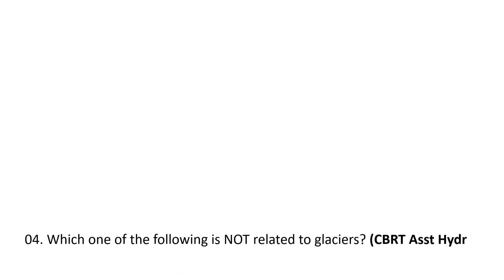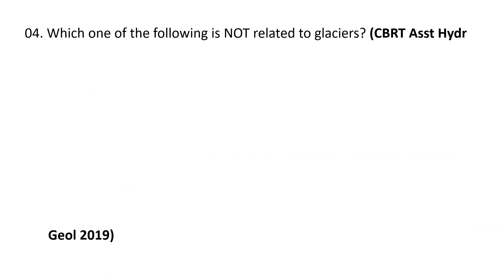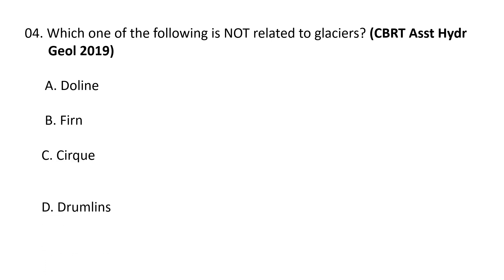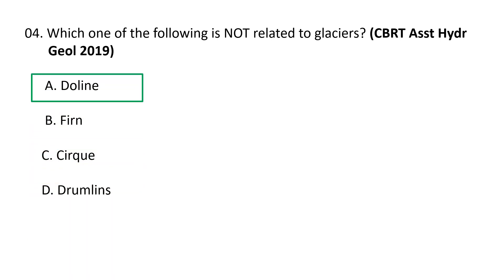Next question: which one of the following is not related to glaciers? a) doline, b) firn, c) cirque, d) drumlins. Doline is not related to glaciers, whereas firn, cirque, and drumlins are all related to glaciers. Dolines are formed by two main methods: slow solutional removal of rock from the surface downward, or by collapse of overlying material into an underground cave or chamber — also known as a collapsed doline. So the correct option is a) doline.